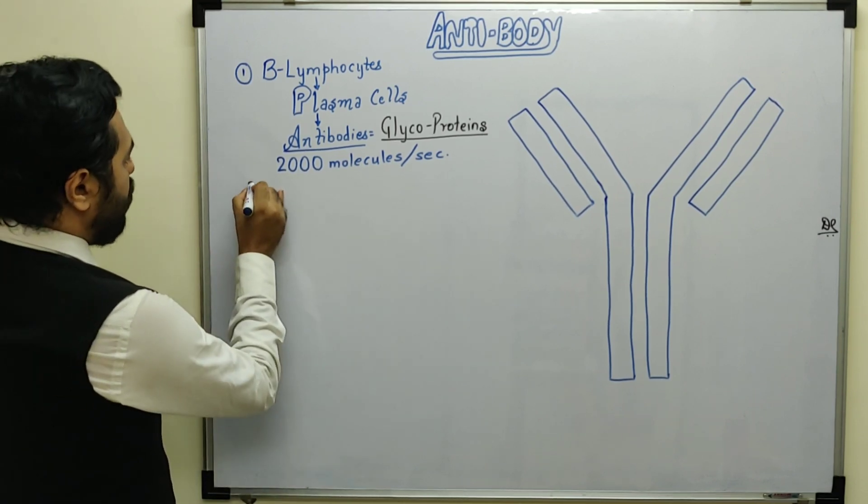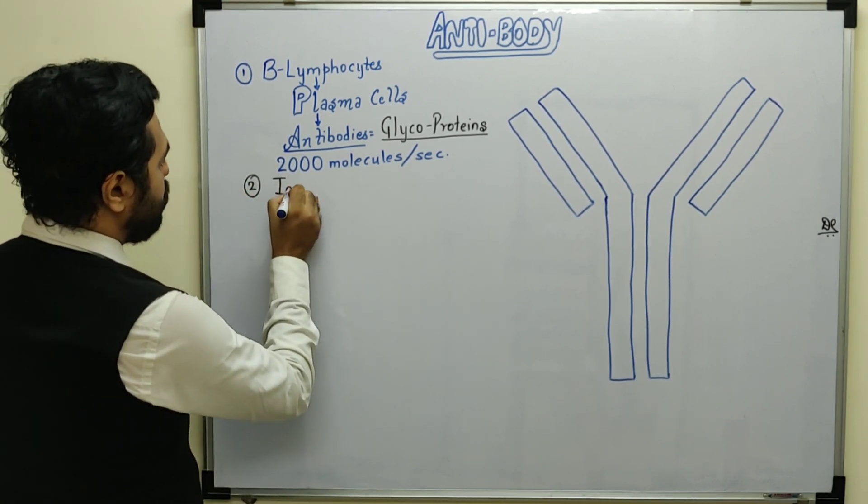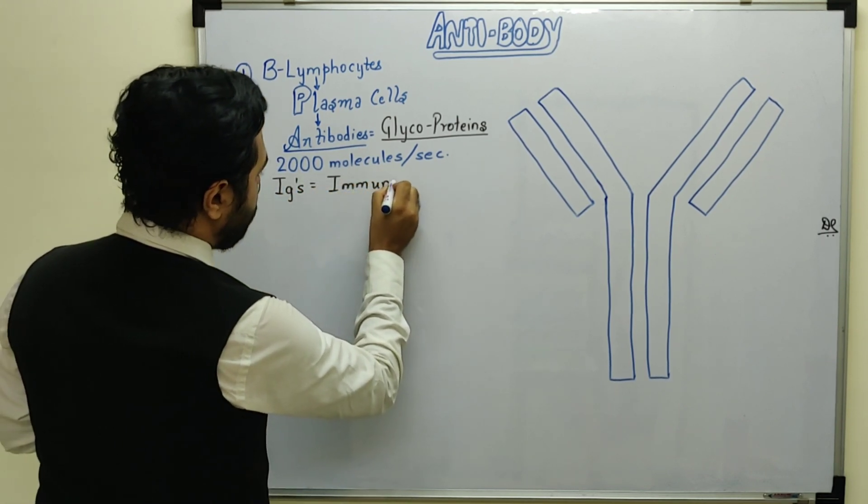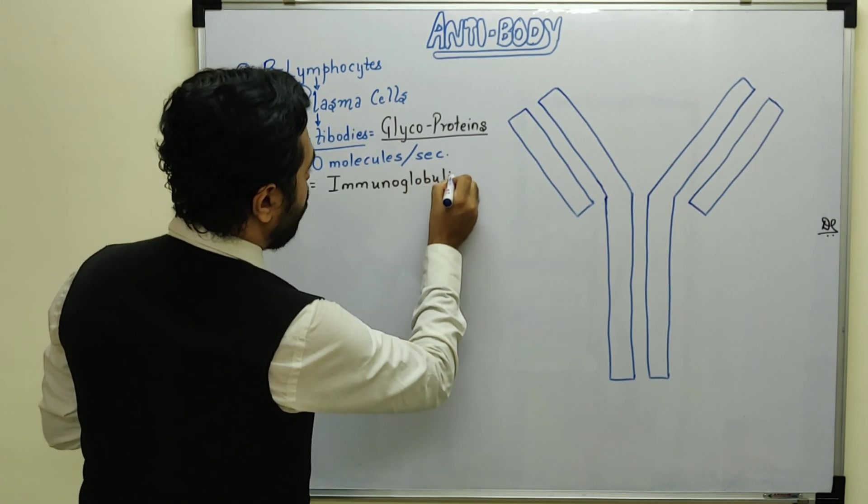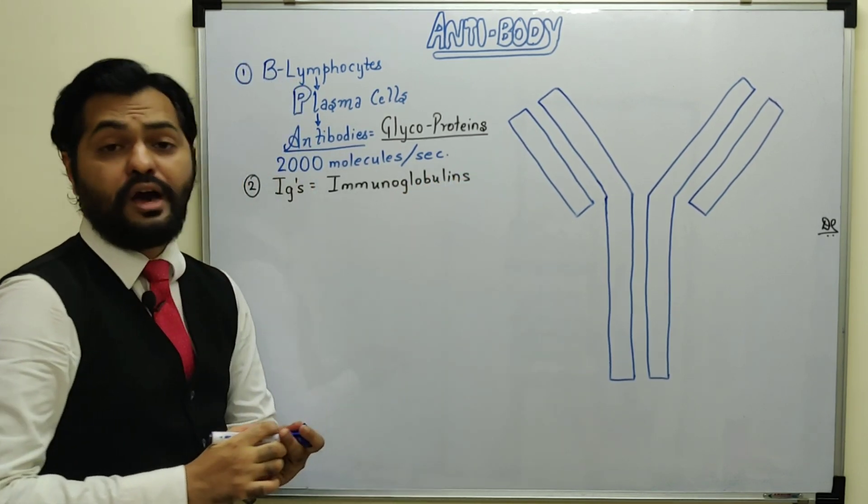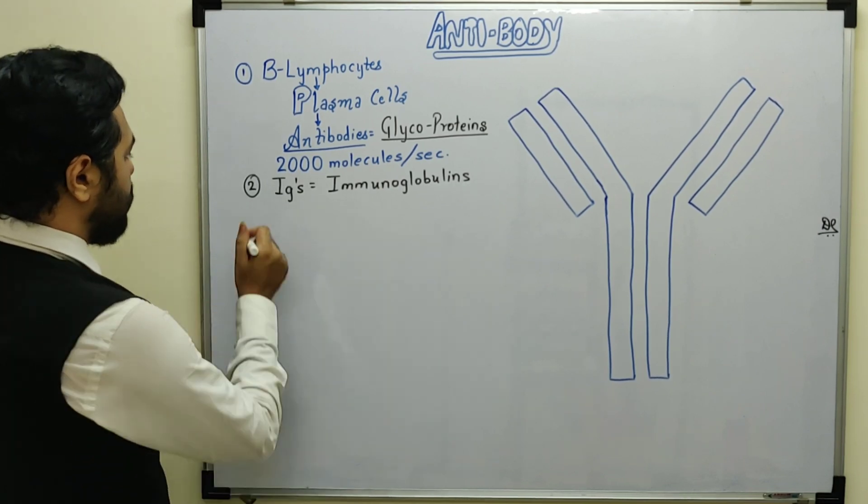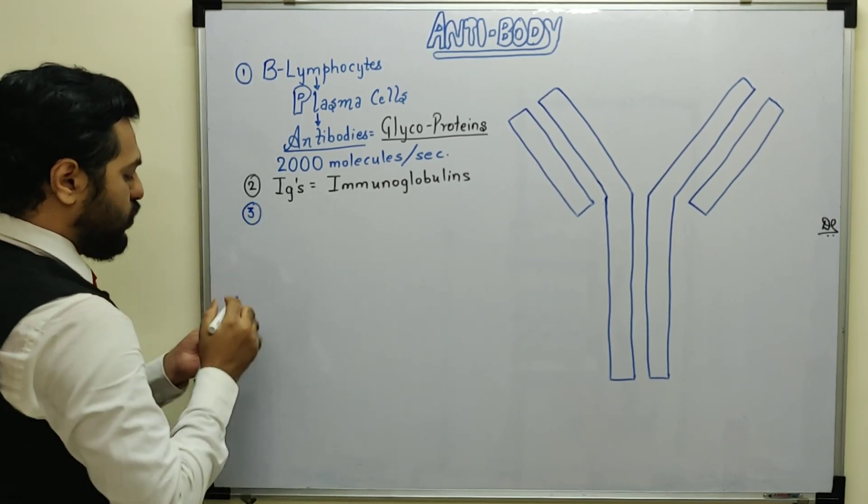These antibodies are also known as Ig's, short form for immunoglobulins. In my next videos, I will discuss the different types of immunoglobulins and their roles. But antibodies are also known as immunoglobulins. Now, let's properly discuss the structure.